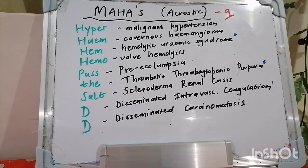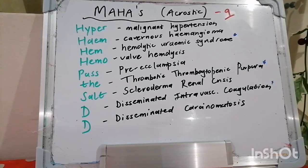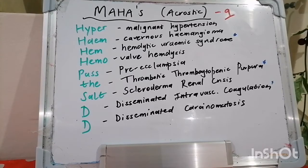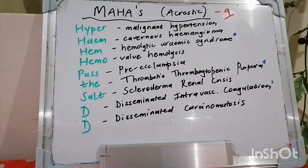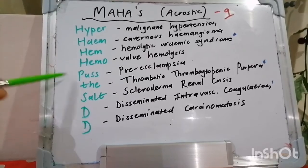Clinical features include MAHA in 100% of cases, thrombocytopenia in 90%, together with renal dysfunction, fever, and neurological abnormalities — such as delirium, focal neurological deficits, seizures, and coma — in 90–100%. Schistocytes are also present on peripheral smear. Treatment is full-volume plasma exchange with plasma pheresis and FFP infusions. Steroids and rituximab can be used if non-resolving and refractory. Avoid platelet transfusion, aspirin, and anti-motility agents. TTP has a very high mortality without treatment.